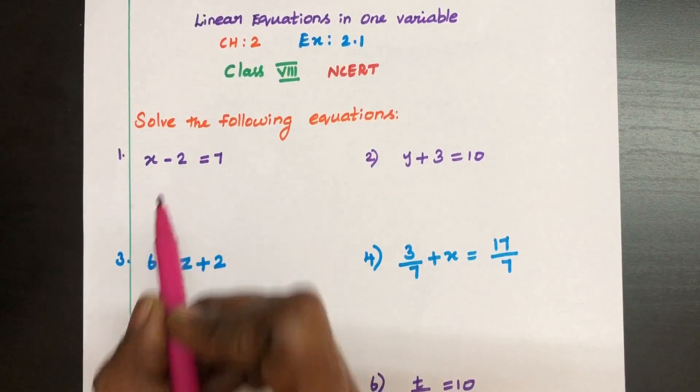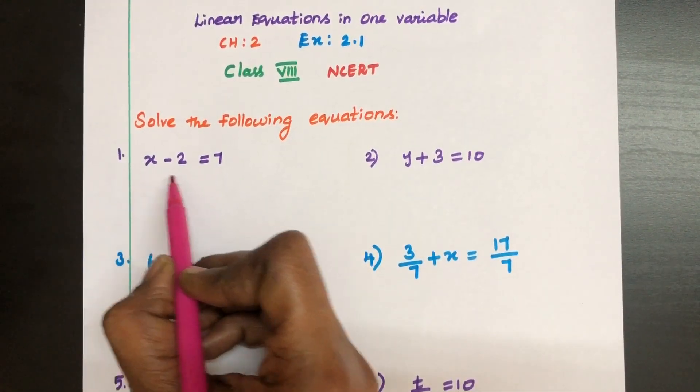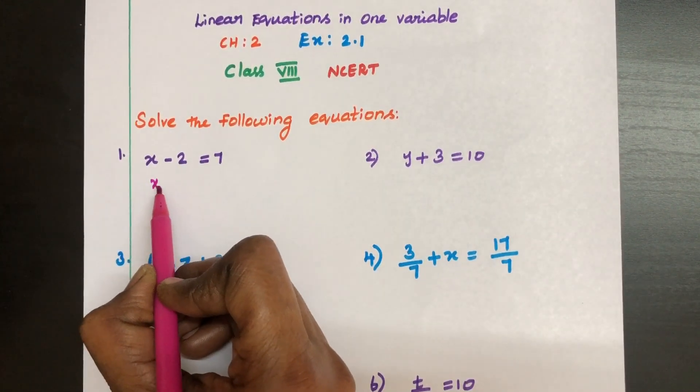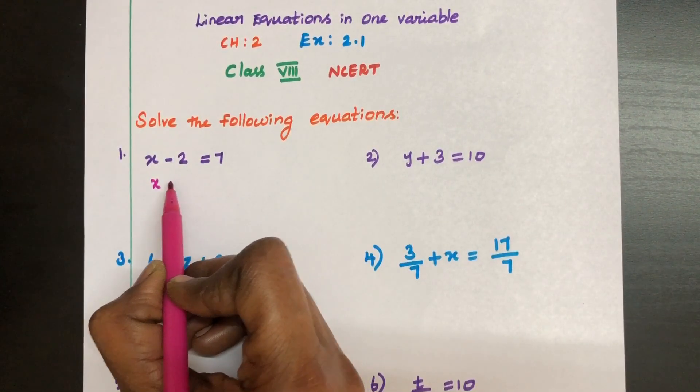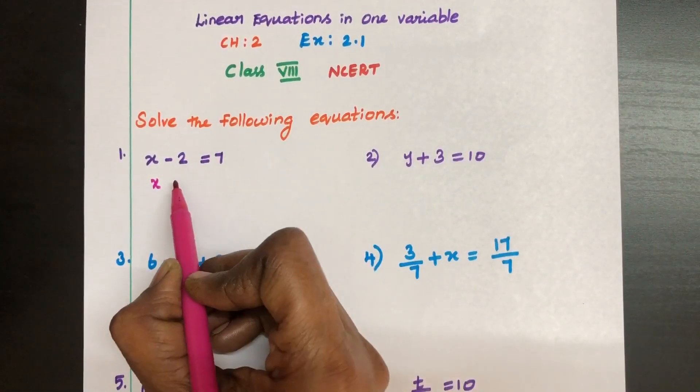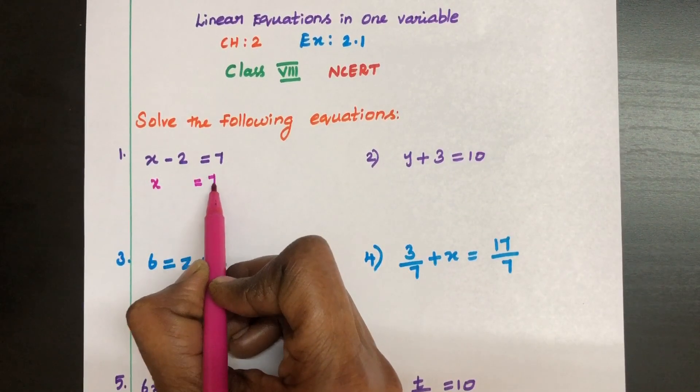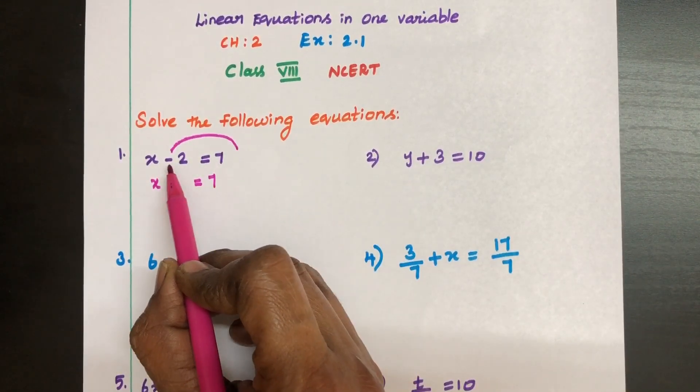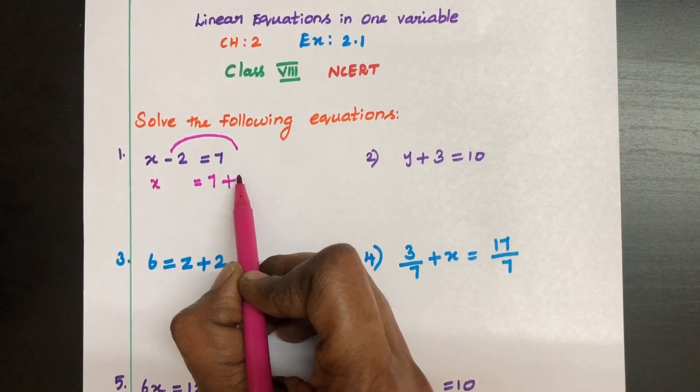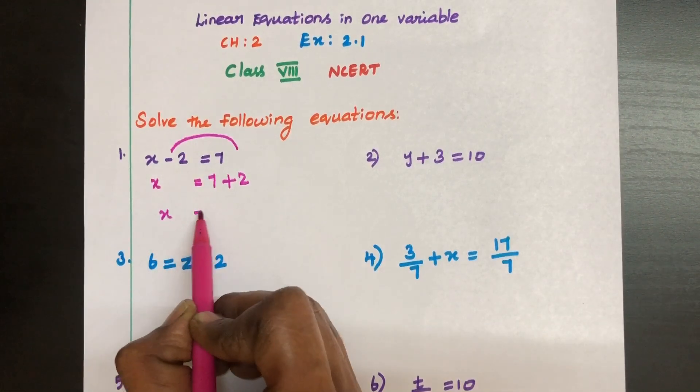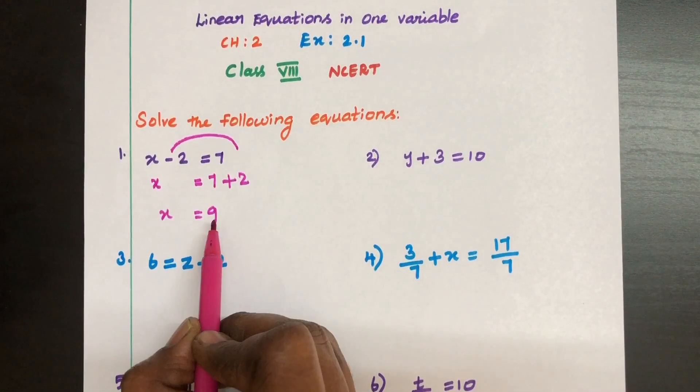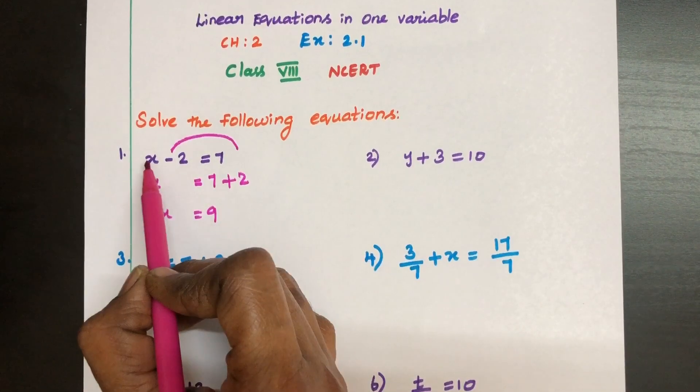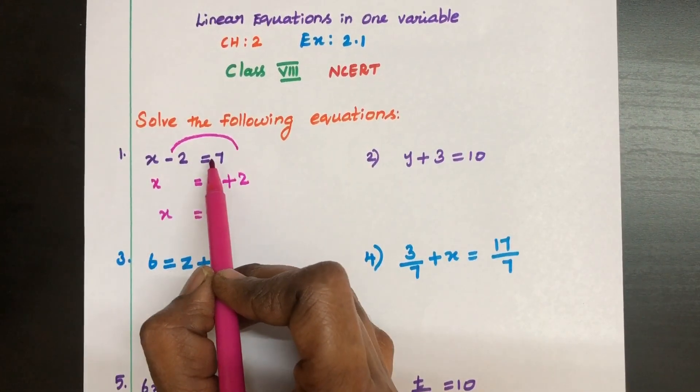X minus 2 is equal to 7. See here we need to find the value of this variable X. For that, have X left hand side and take all the numericals in the right side. So 7 is already there. We are going to take this 2 here. So this negative 2 becomes positive 2. X equal to 9. So the value of X is 9.